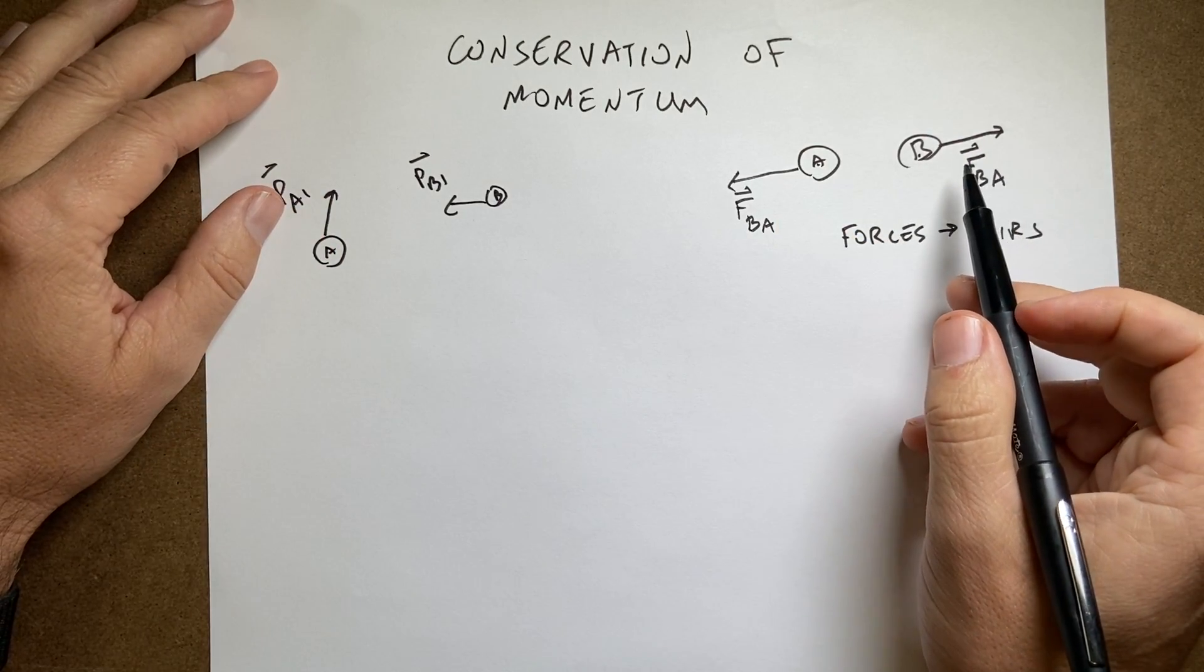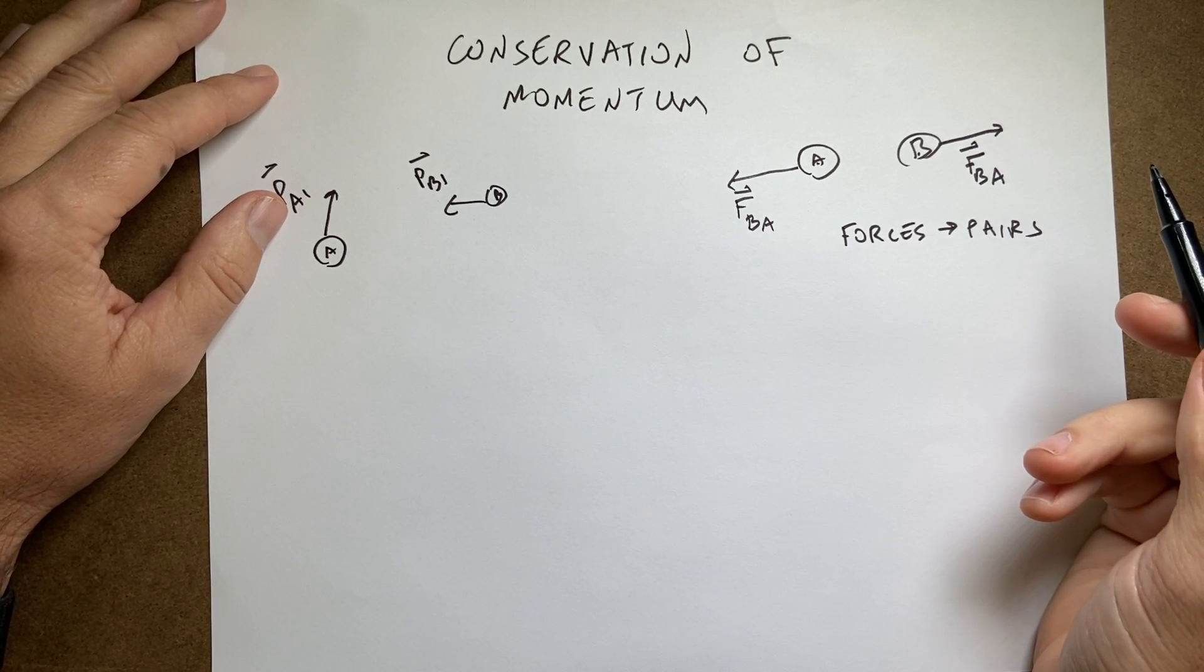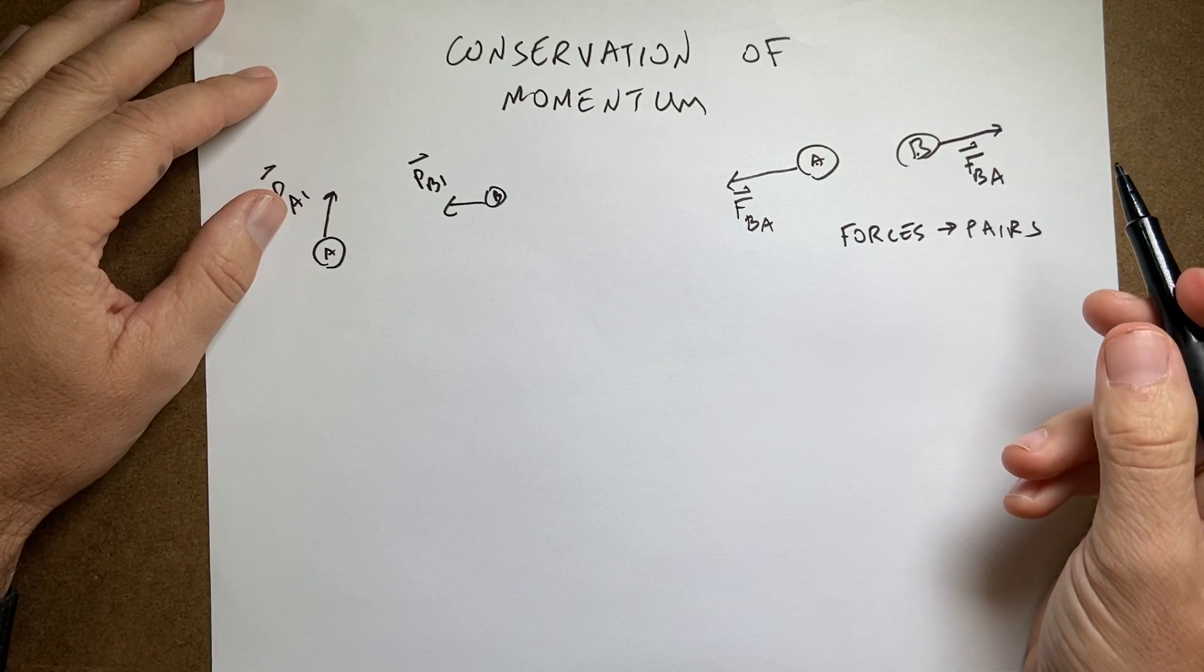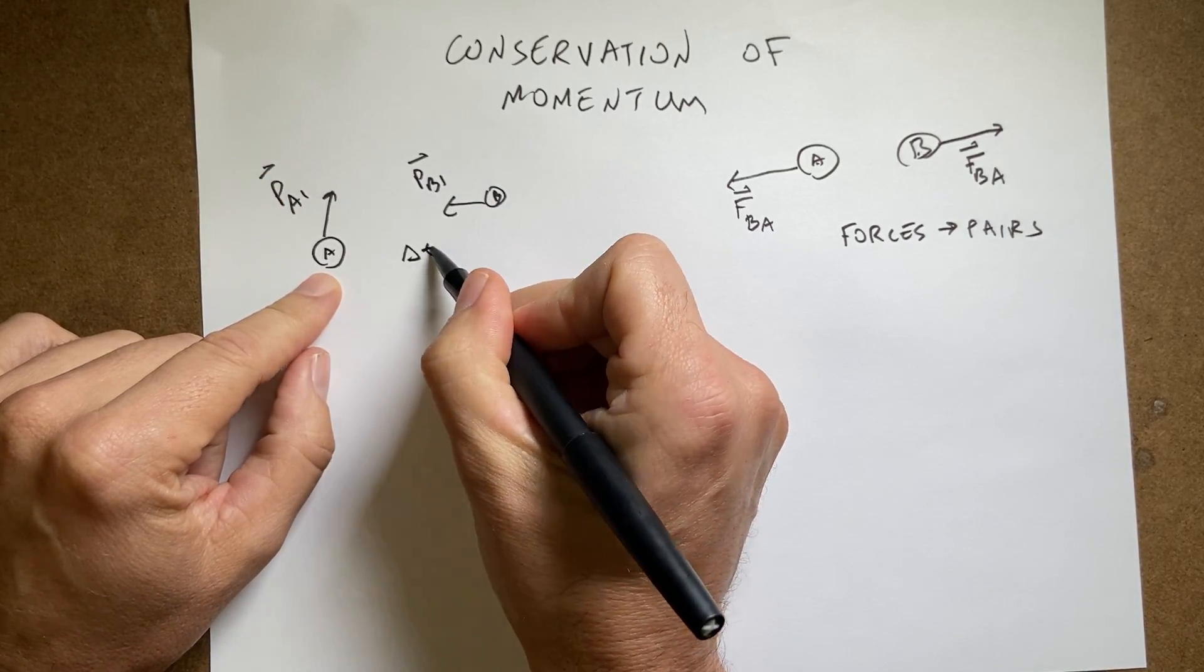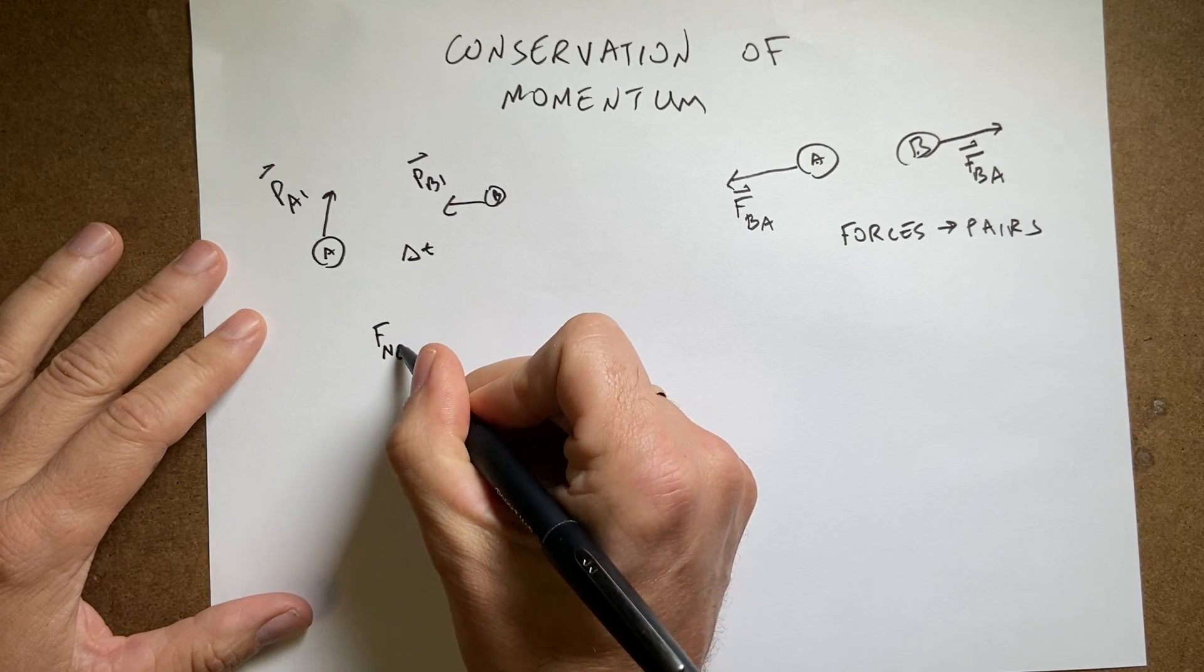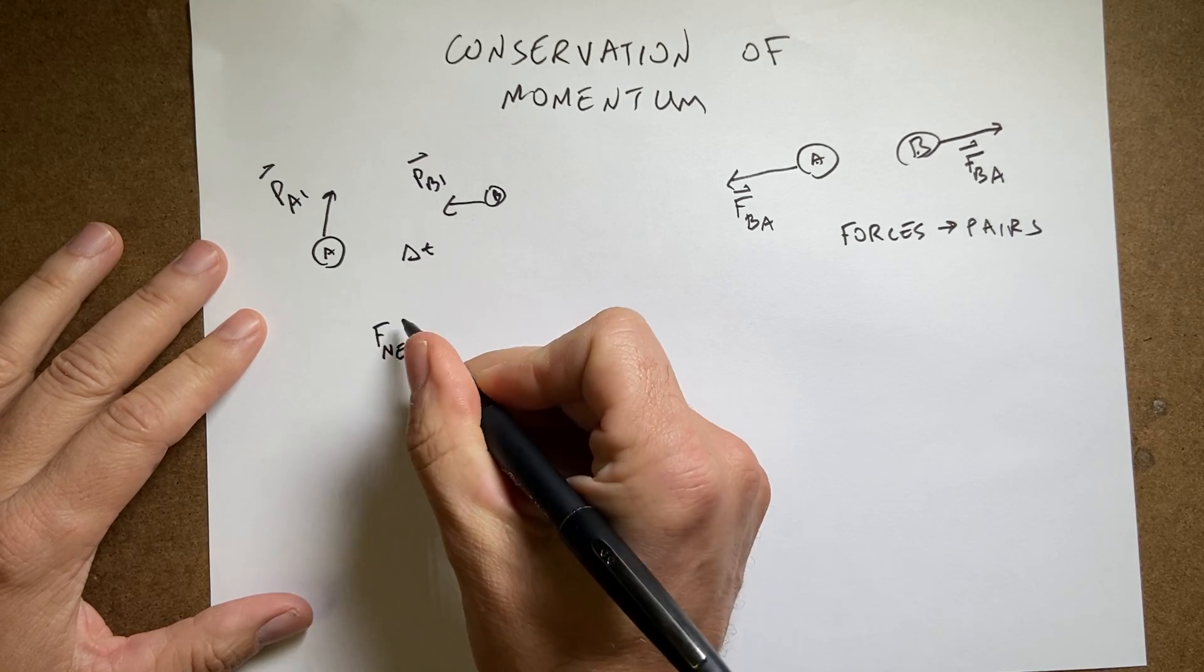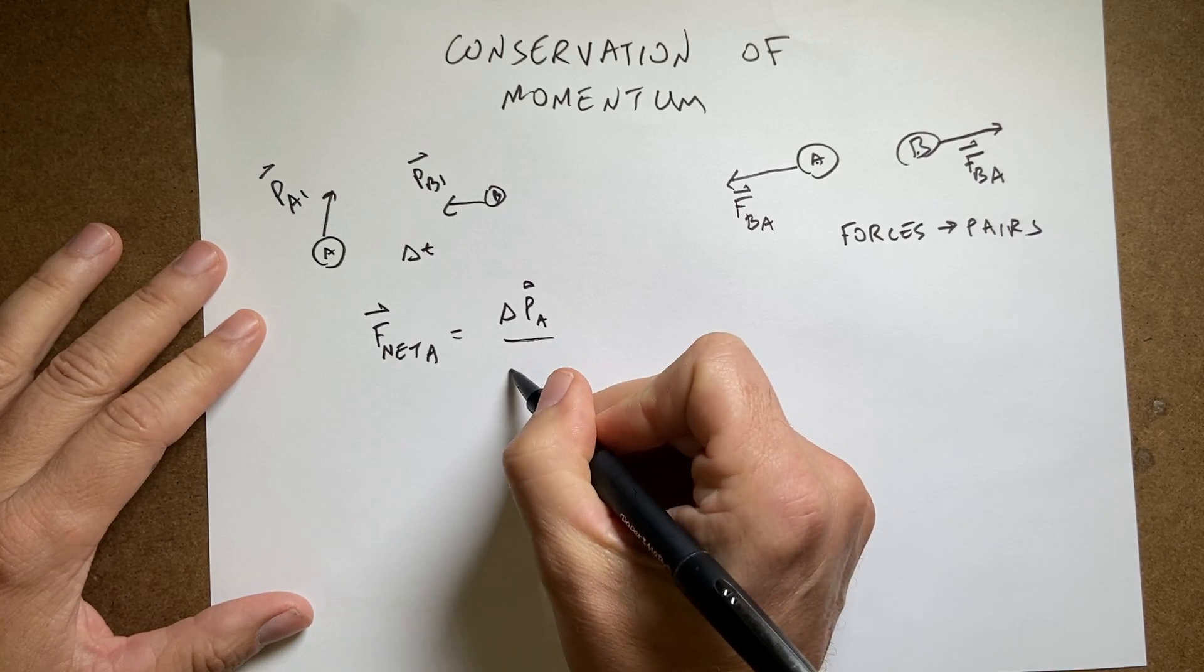Okay, so let's use this along with the momentum principle. I'm going to write it in a short time interval, so imagine that there's some short time interval, these are interacting some delta T. So, if that's the case, I can write F net A equals delta PA delta T.